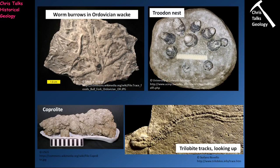In terms of trace fossils, here we have examples of burrows within muddy sediment, examples of nests — which don't contain the organism itself, just an indicator of it having been there — a coprolite (essentially fossilised poo), and trilobite tracks showing the traces left as the trilobite was moving through the sediment. These are all indicators of an organism having been there; the bodies are not present.